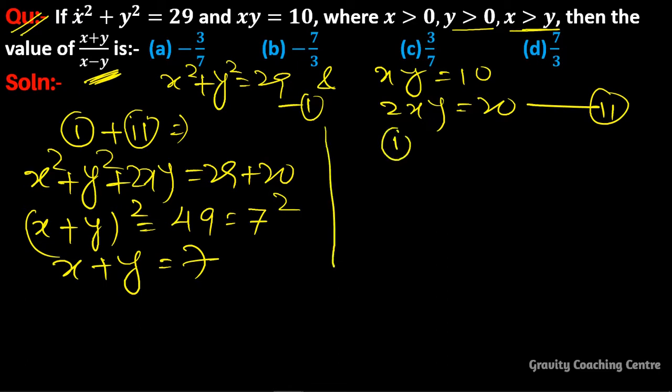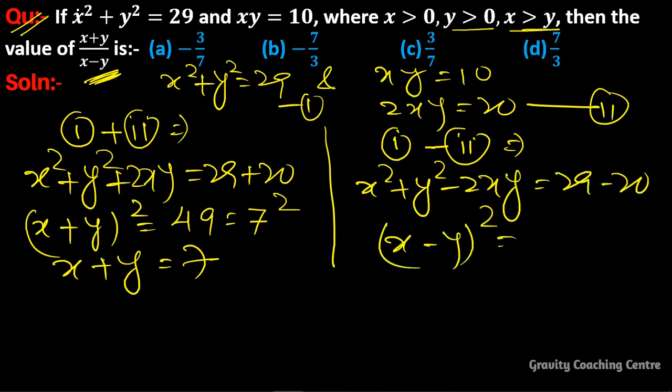Now subtracting the second from the first equation, we get x² + y² - 2xy = 29 - 20. We can write this as (x - y)² = 9 = 3². So x - y = 3.